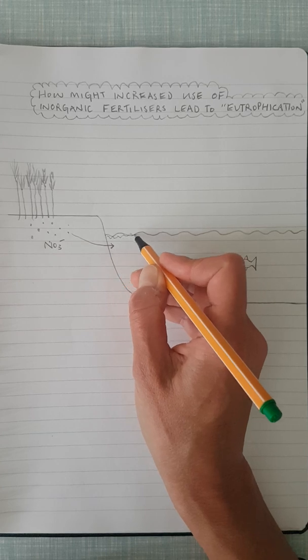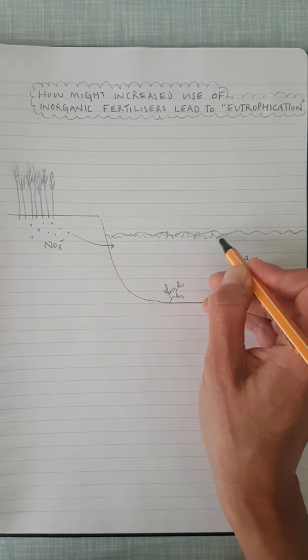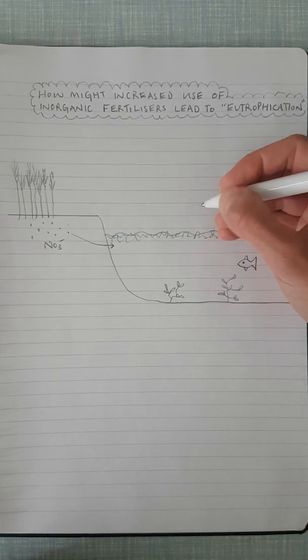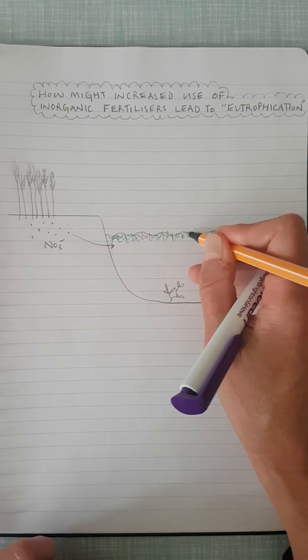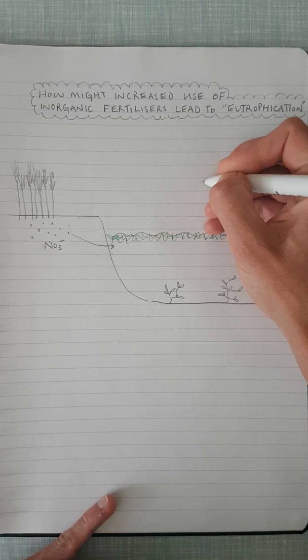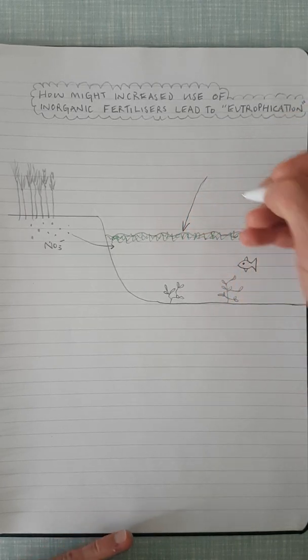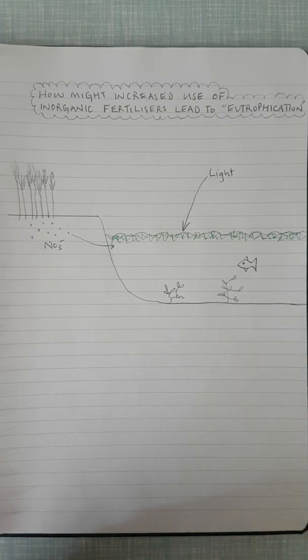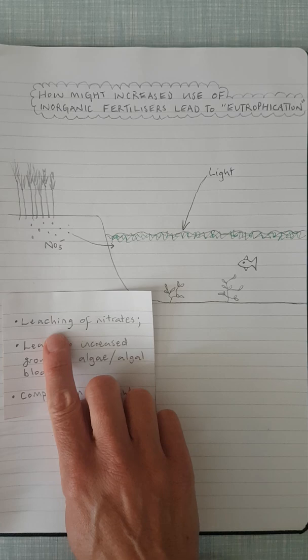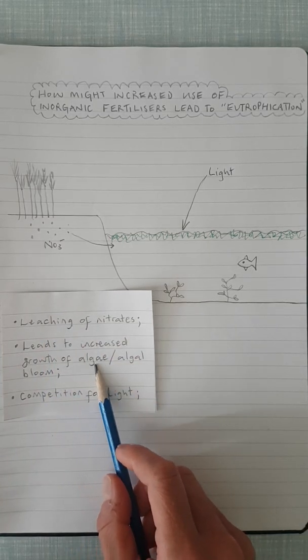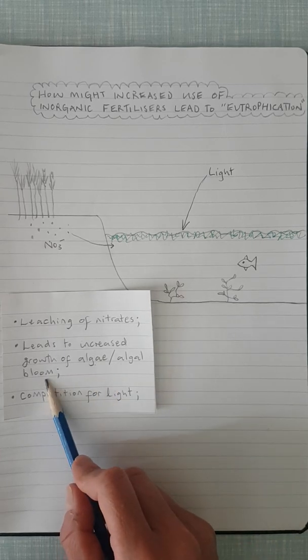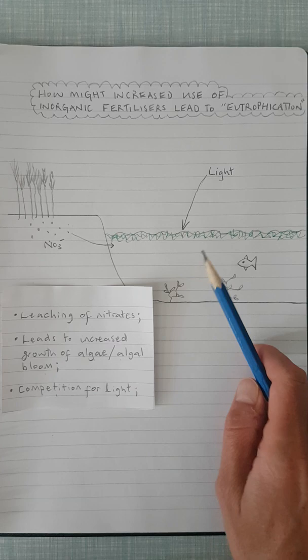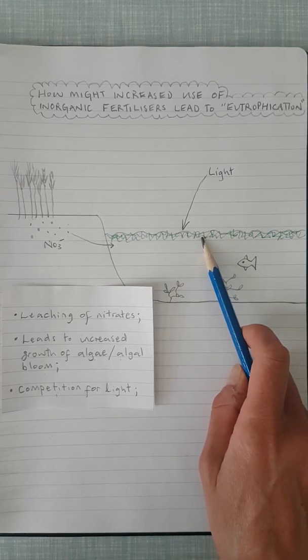And as they increase their rate of growth, they sit on the surface of the water like this. This green squiggle here is meant to be algae. Now what happens then is now that if you've got more algae, I'll just make that a little bit greener, less light is going to be able to penetrate through that layer of algae to be able to get to the other plants that are growing in this body of water. So what we've got so far is leaching of nitrates leads to an increased growth of algae, sometimes that's called an algal bloom. And now we've got competition for light, competition between the algae and the plants. Now clearly in this scenario, I think possibly the algae might out-compete the plants.